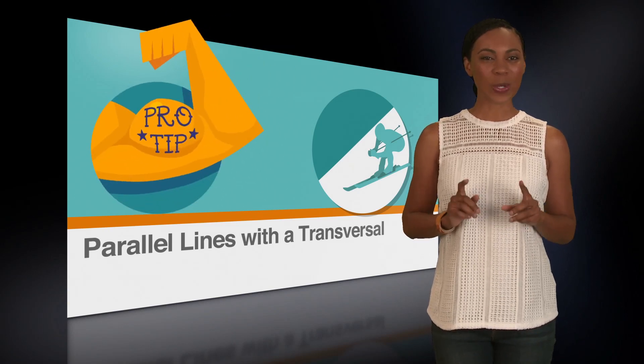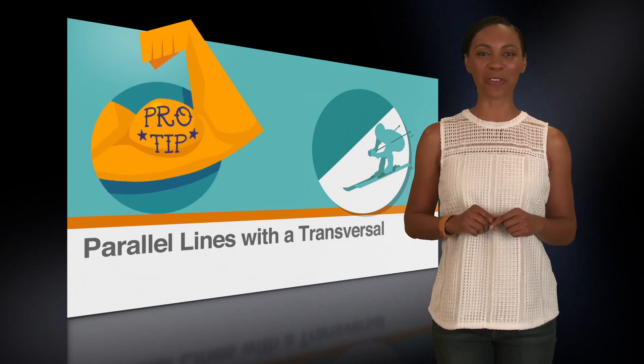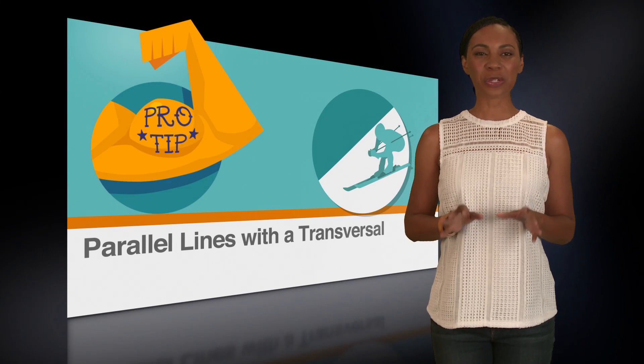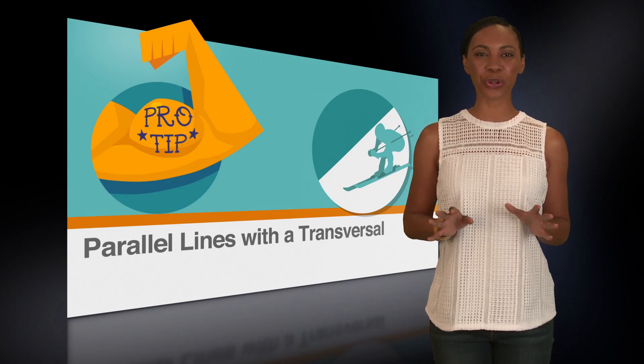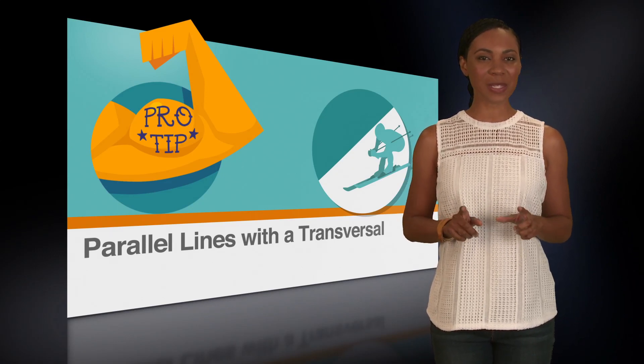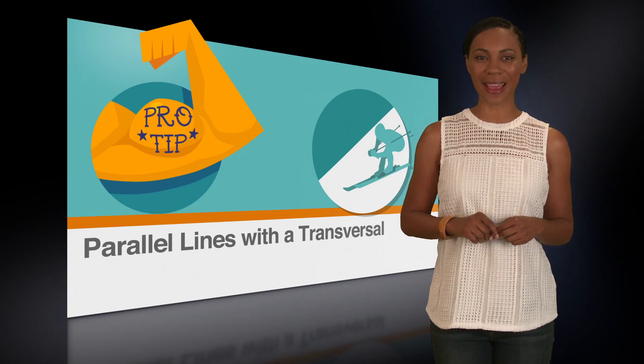Here's a pro tip. When solving ACT problems involving parallel lines, the two safest and most error-free congruencies to use are opposite angles and corresponding angles.